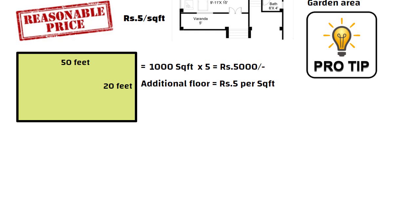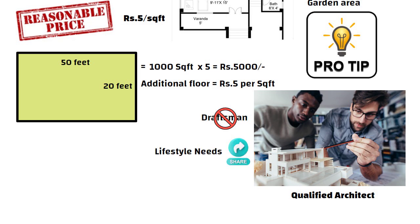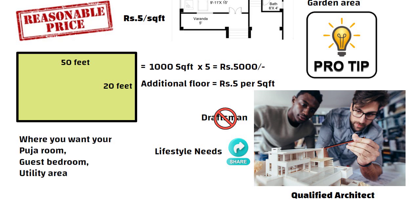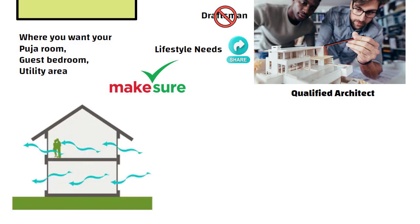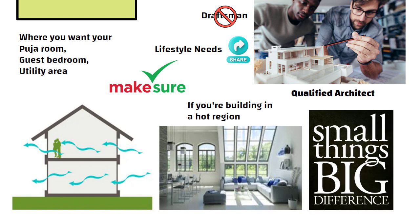Here are some pro tips. Always get this done by a qualified architect, not just a draftsman. Share your lifestyle needs with them, like where you want your pooja room, guest bedroom or utility area. Also make sure there is enough cross ventilation and natural light, especially if you are building in a hot region. These small things make a big difference.